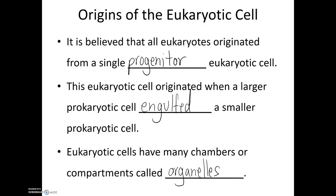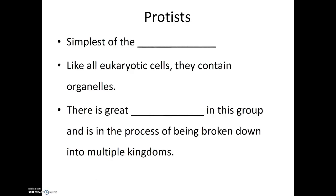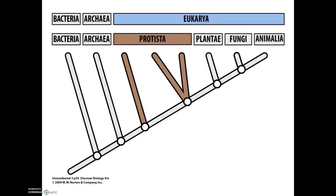Talking about organisms made of eukaryotic cells, the simplest of those are in kingdom Protista. These are the simplest of the eukaryotes and, like all eukaryotic cells, protists contain organelles. There is great diversity in this group, and kingdom Protista is in the process of being broken down into multiple smaller kingdoms. Looking at the tree of life, under domain Eukarya and kingdom Protista, we see several branches — and it's the presence of these branches that means we'll likely be transitioning this into several smaller kingdoms.